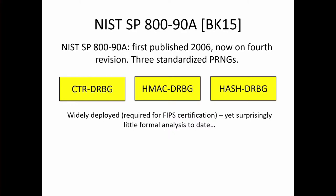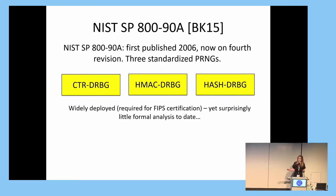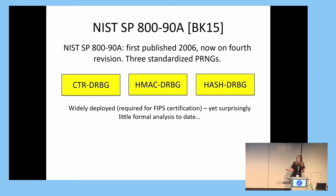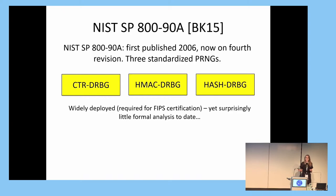The NIST SP-800-90A standard gives three constructions of PRNGs, each based on a different primitive. There's the Counter-DRBG based on a block cipher, HMAC-DRBG based on HMAC, and Hash-DRBG based on a cryptographic hash function. These generators are certainly widely deployed — any software or hardware seeking FIPS certification has to implement one of these constructions. And yet, as we'll see in this talk, these generators have received surprisingly little formal analysis to date.